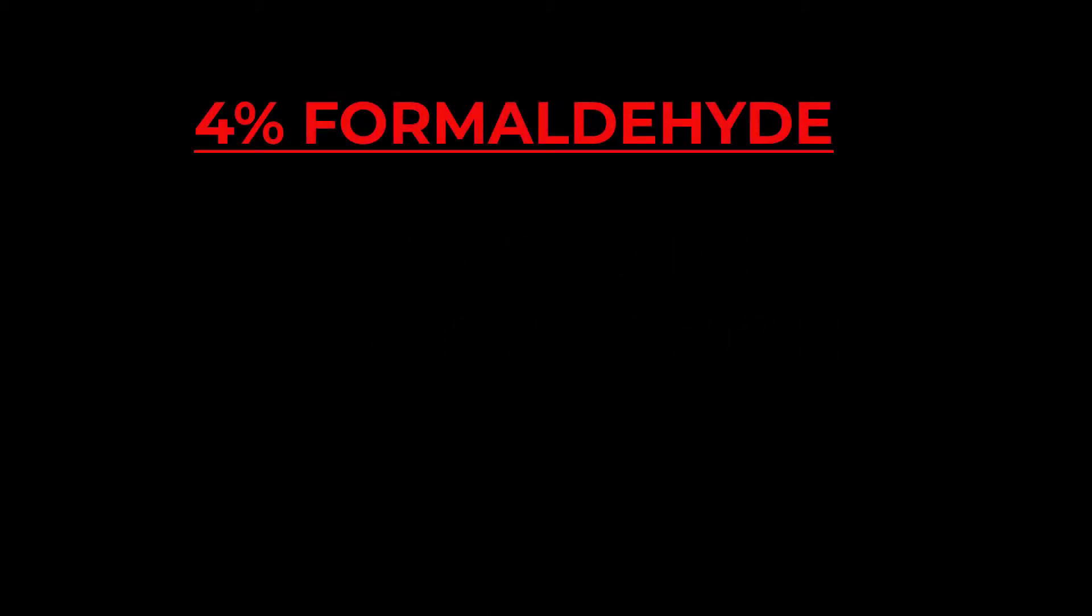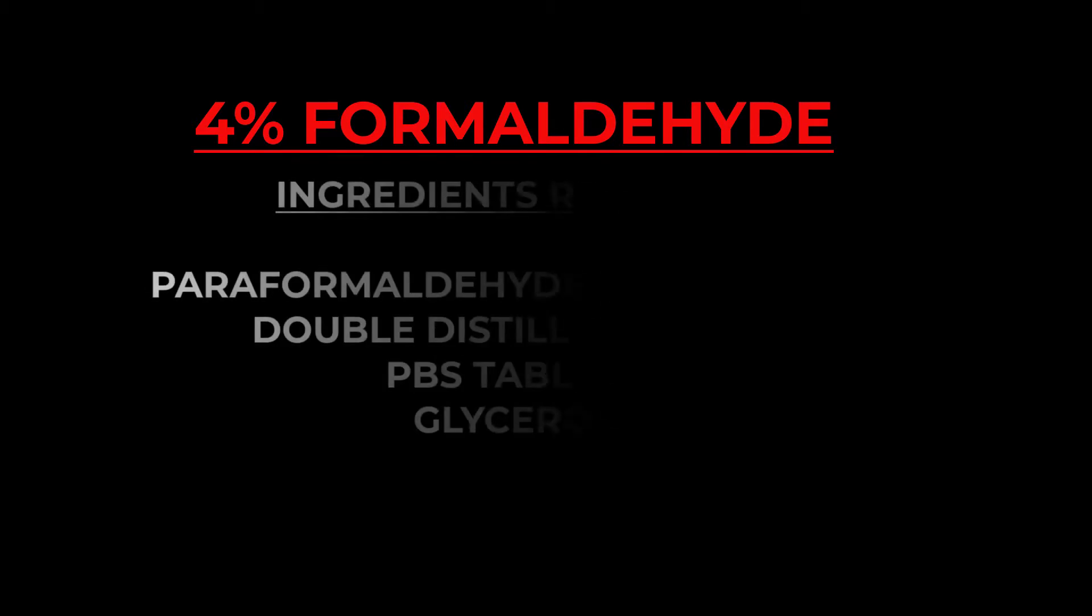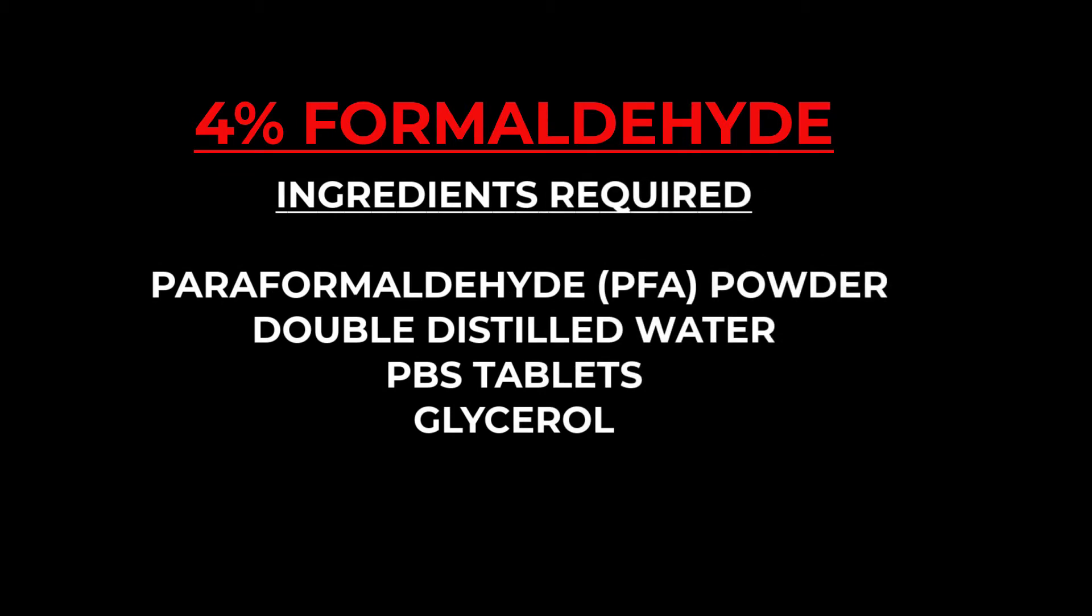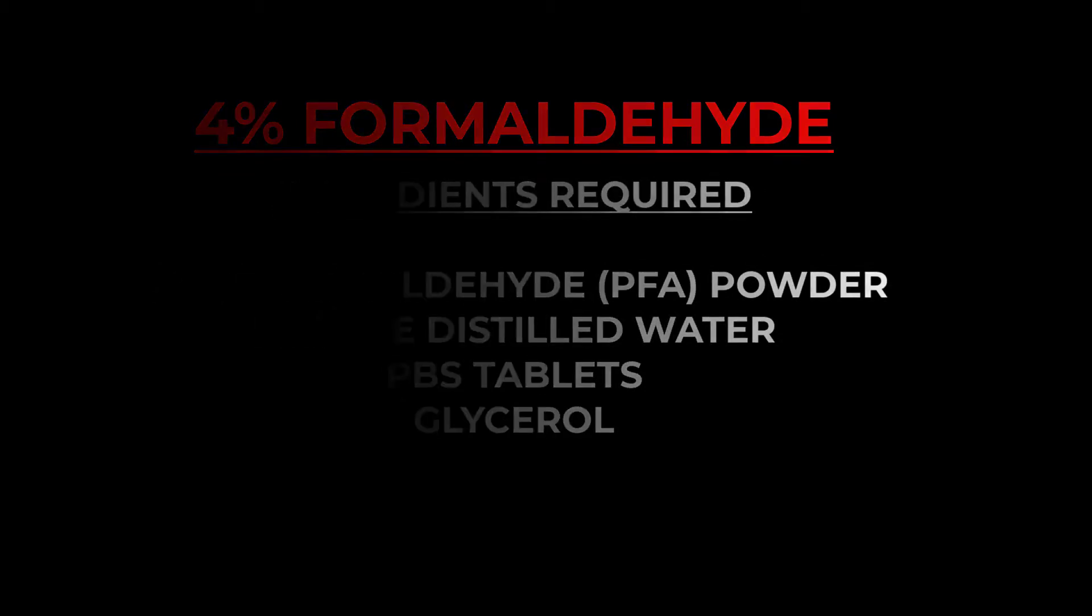4% formaldehyde is generally used to fix live nematodes to prepare permanent mount of the organism. The main ingredients required to make this fixative are as follows. In this video, we aim to make 40 ml of the fixative.